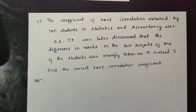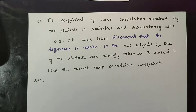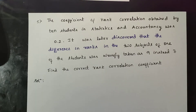The coefficient of rank correlation of 10 students in statistics and competency was 0.2. It was later discovered that the difference in ranks in the two subjects of one of the students was wrongly taken as 9 instead of 7. Find the correct rank correlation.